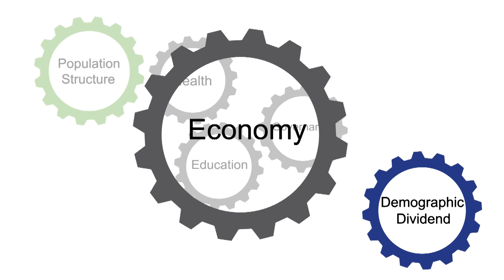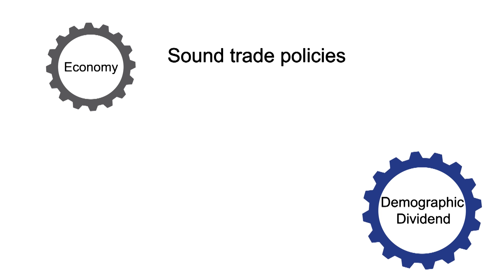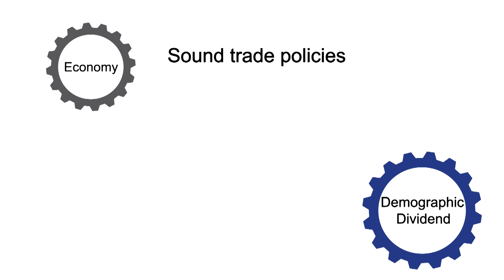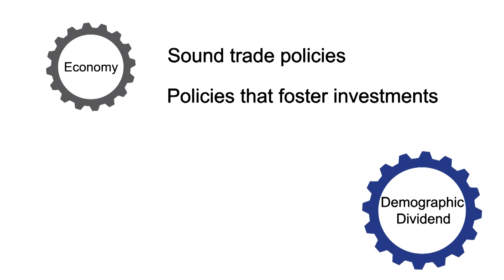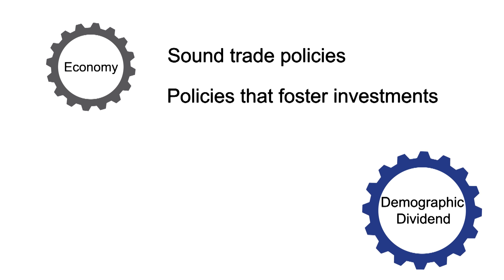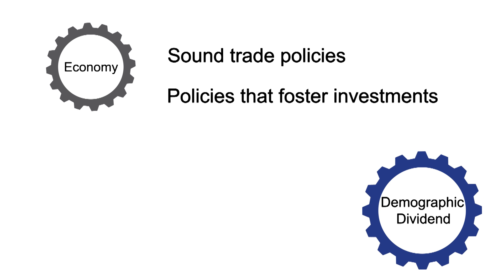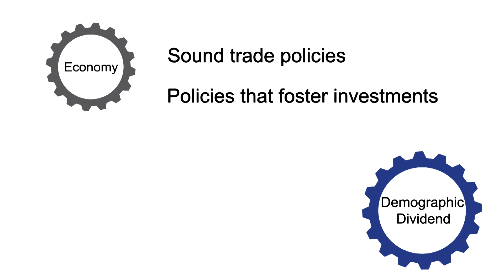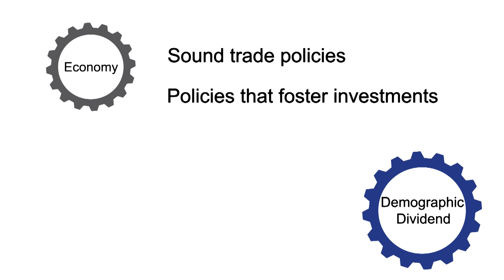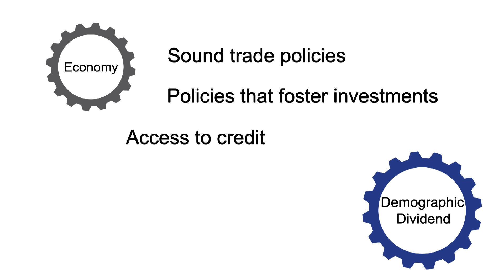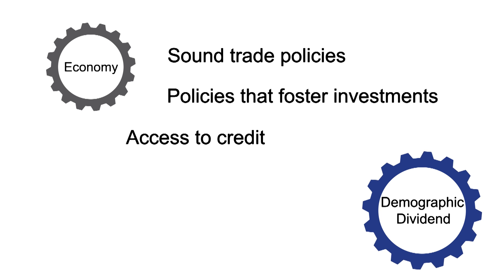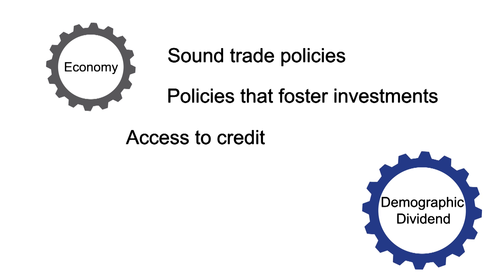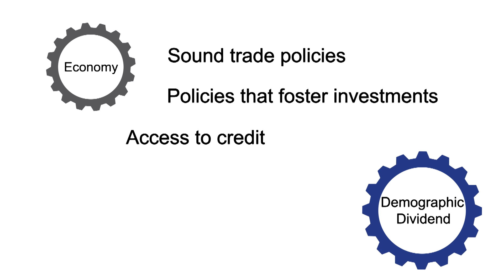The fourth area for strategic investment and policy reform has to do with the economy. Countries need sound trade policies — they need to be able to import as well as export the goods that they manufacture. Trade is a country's lifeblood. Economic policies relate to investments: families through a demographic dividend will have more resources to invest, so there need to be instruments and vehicles through which they can invest. Countries also need policies that promote foreign investments to stimulate infrastructure and job creation. Microfinance programs have proved to be an effective way to improve access to resources in peri-urban and rural areas, so these programs need to be expanded.